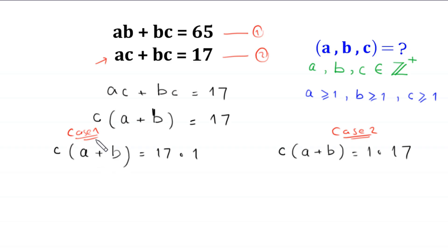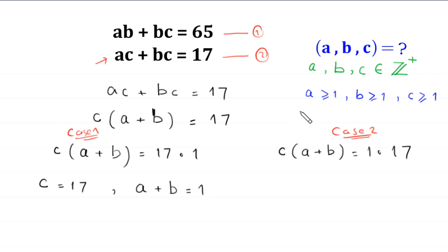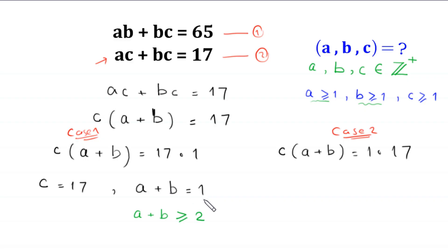First, we solve Case 1. From this case, C is equal to 17 and A plus B is equal to 1. However, since A ≥ 1 and B ≥ 1, A plus B must be greater than or equal to 2. So A plus B cannot equal 1 — this case is not possible and will be rejected.